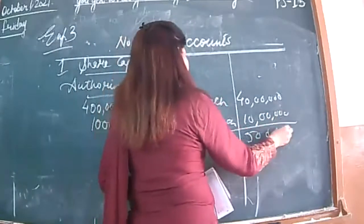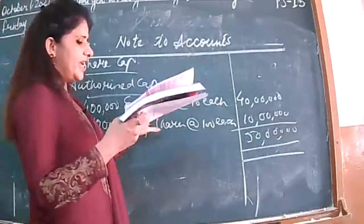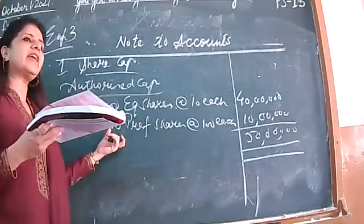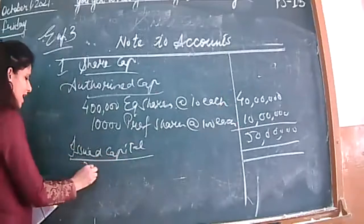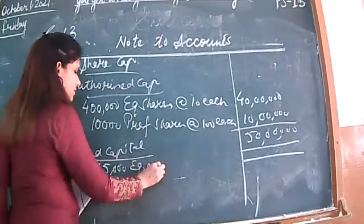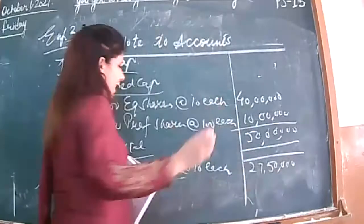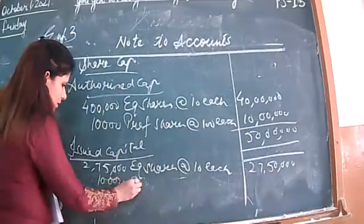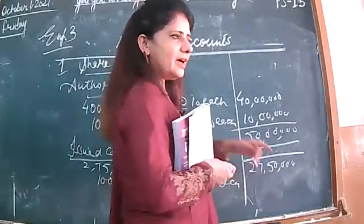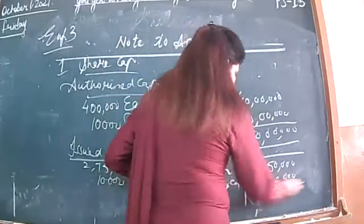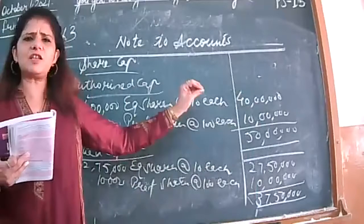Issued capital: 2,75,000 equity shares at the rate of 10 each — 27,50,000. After that, 10,000 preference shares at the rate of 100 each — 10,00,000. So 27,50,000 plus 10,00,000 gives issued capital total of 37,50,000. Is it matching with your book? Issued capital done. These two are very easy — multiply and write. Now subscribed capital.